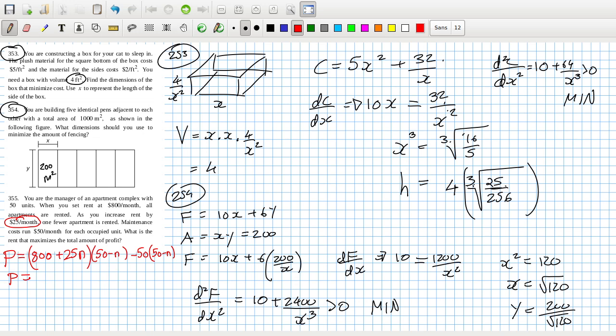So 800 times 50, that is 40,000 plus, that is 25 times 50 minus 800. That's plus 50N, I know, minus has to be minus 25N squared minus 2,500 plus 50N.